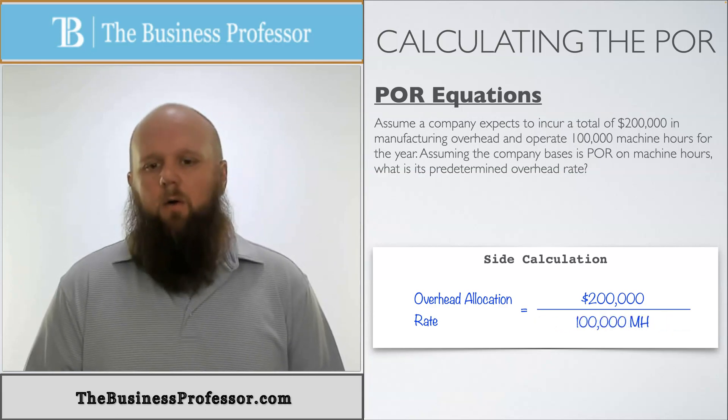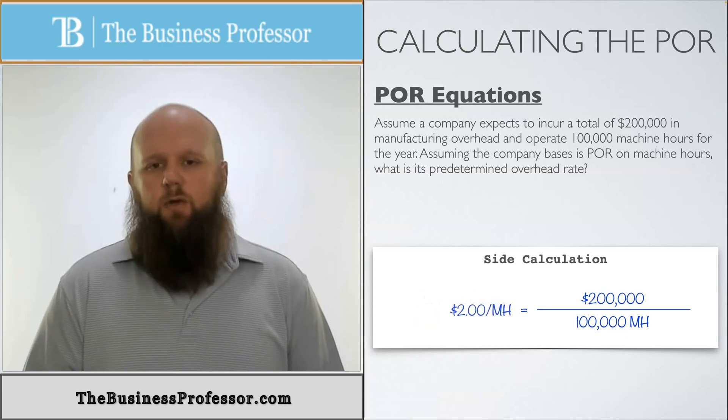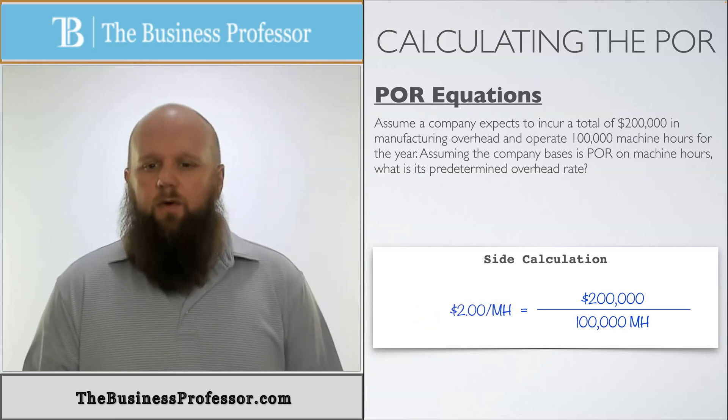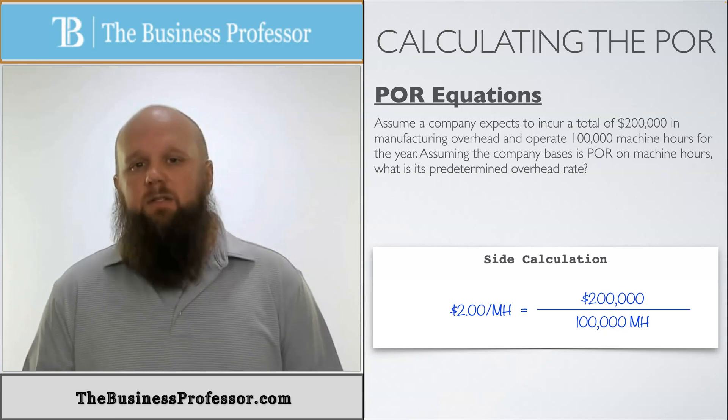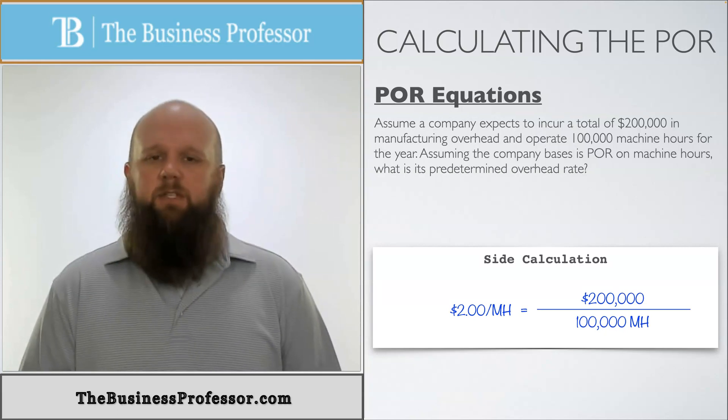That's going to give us a POR, or overhead allocation rate, of $2 per machine hour. So for every machine hour a job uses, we're going to actually apply $2 per machine hour.